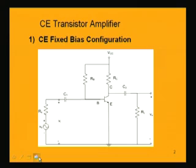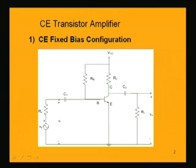The fixed biasing scheme has a biasing resistance RB connected to the base terminal, sharing the same VCC with the collector used for reverse biasing. We are taking an NPN transistor in common emitter configuration. Apart from the biasing resistances, there are capacitances used for coupling the signals. C1 is the input coupling capacitor coupling the signal Vs, and the output V-naught is obtained by coupling the collector with capacitor C2.